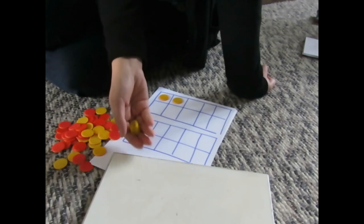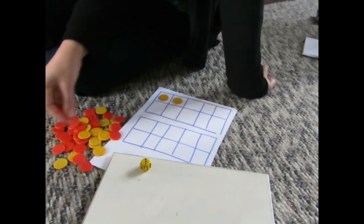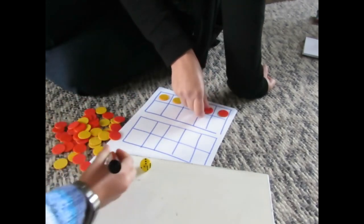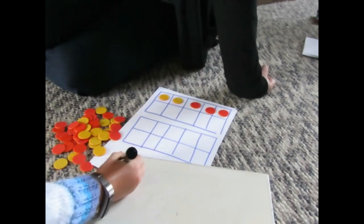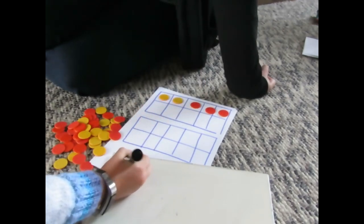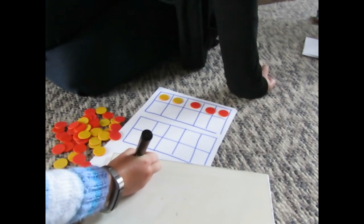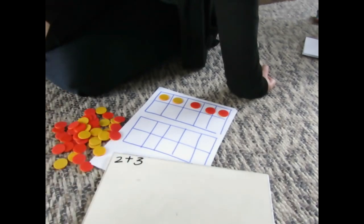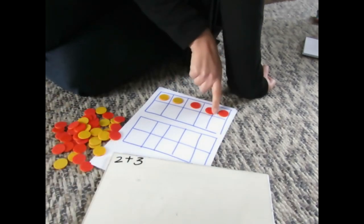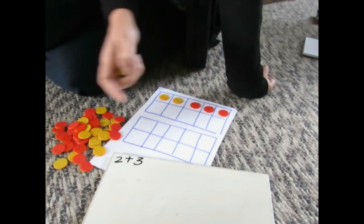So it's my turn now. I've got a three. One, two, three. So you record our calculation. So we're going to do two plus three. That's a number one to five. It is a number one to five and we can see it's a bond to five can't we because our top row is full.